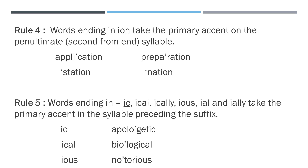The fourth rule is words ending in -ion take the primary accent on the penultimate syllable. Penultimate means second from the end, or last but one. Examples: application, preparation, station, nation.